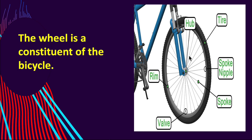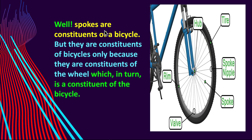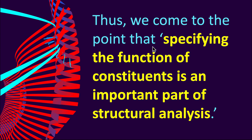The wheel is a constituent or part of the bicycle, but in turn the wheel consists of hub, spokes, rim, tire, valve, etc. Thus, hub, spokes, rim, and tire are constituents of a wheel — they are not the immediate constituents of a bicycle. Spokes are constituents of a bicycle only because they are constituents of the wheel, which in turn is a constituent of the bicycle. The relation between a spoke and a bicycle is indirect, mediated by the wheel. The spokes don't have a function in respect of the bicycle directly, but only in respect of the wheels. Specifying the function of constituents is an important part of structural analysis.